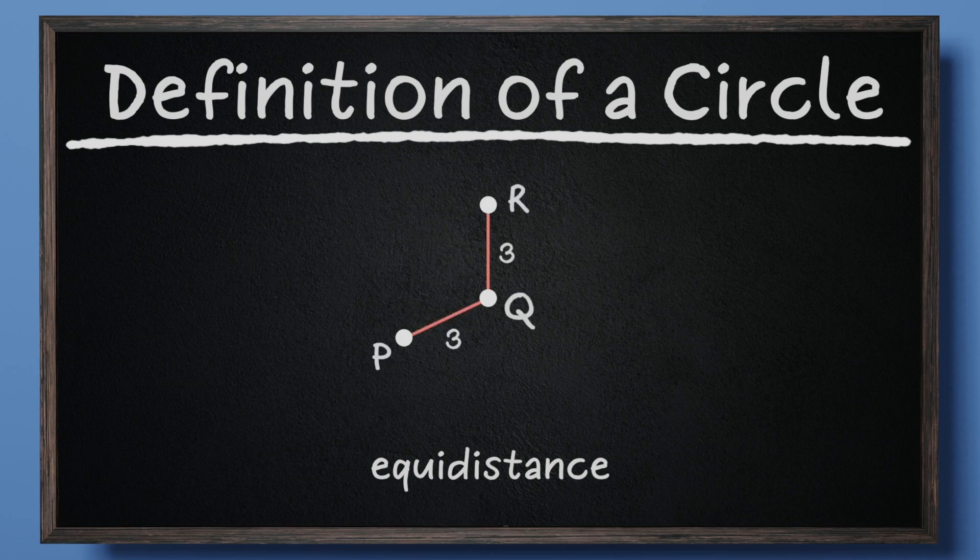Look at points P, Q, and R. See how both points P and R are three units of distance away from point Q? This means that points P and R are equidistant from point Q.